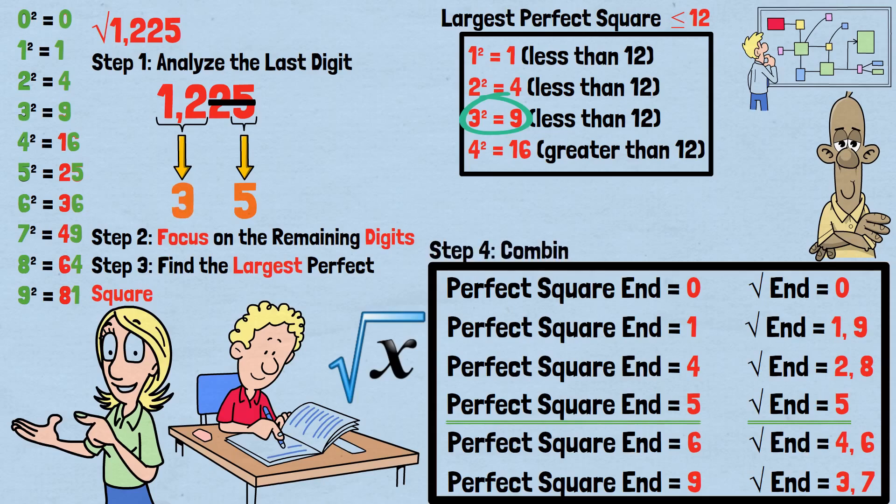Step 4: Combine the results. We have 3 from step 3 and 5 from step 1. Therefore, the square root of 1,225 is 35. Let's verify: 35 squared equals 35 times 35 equals 1,225. Perfect.